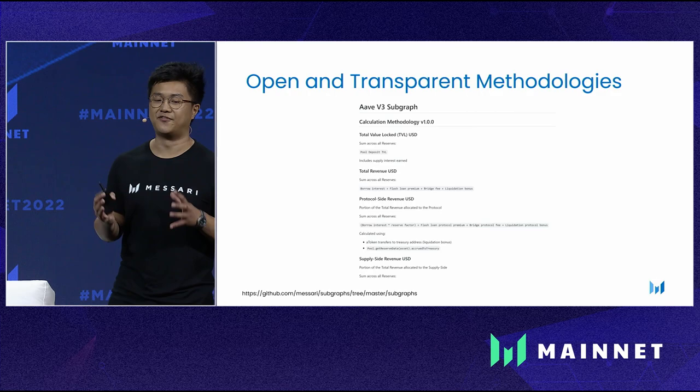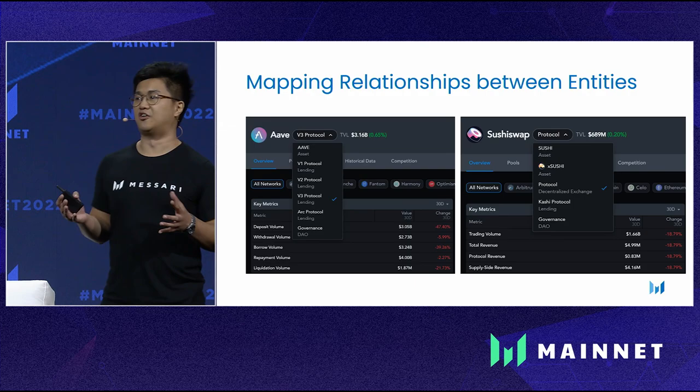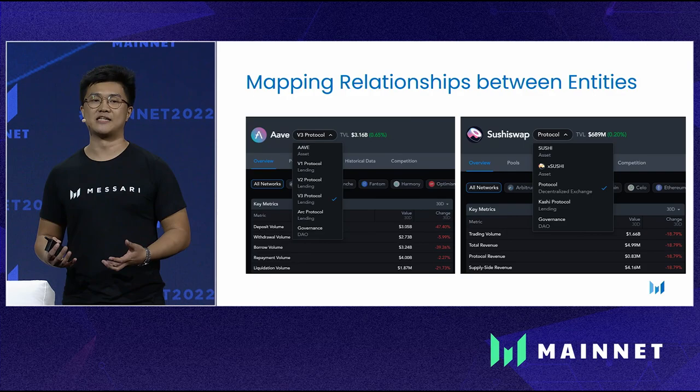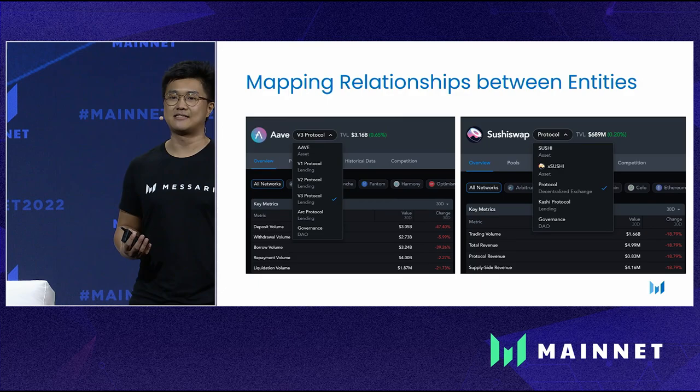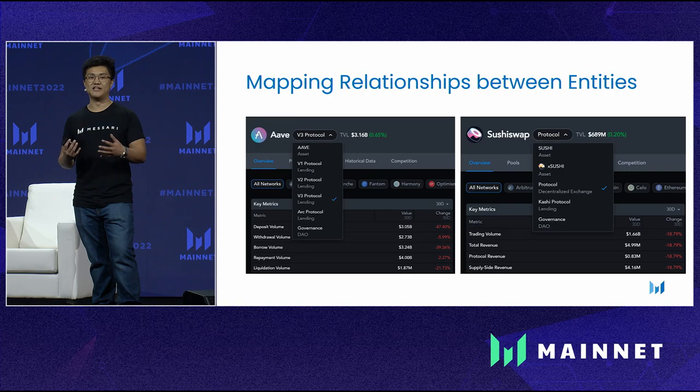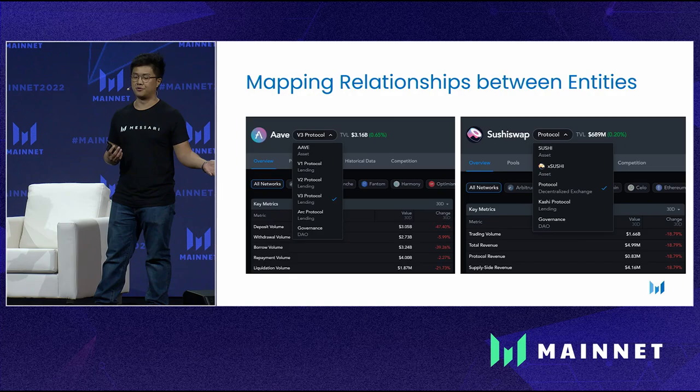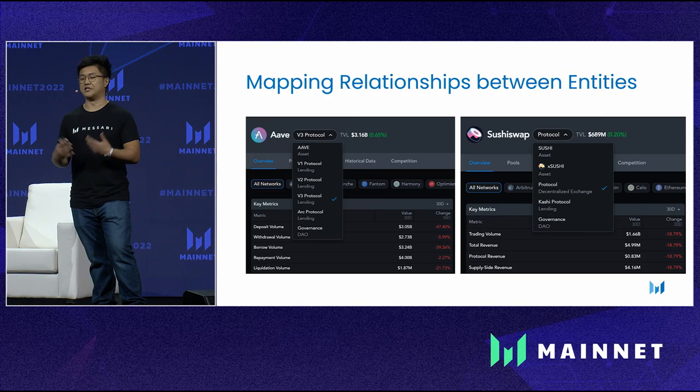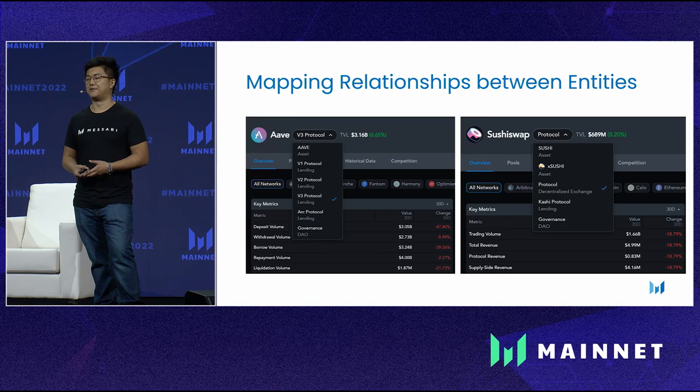We want to build the most accurate and best centralized repo for transparent methodologies. With the introduction of protocols in Mazzari, this enables us to begin mapping relationships between entities, and Mazzari is the first in the industry to begin doing this. Because we already support assets and DAOs, with the addition of protocols, individuals can now easily switch between Aave the asset, any of the Aave protocols, and Aave the DAO. Another example is SushiSwap, where you can switch between Sushi, xSushi, the various Sushi protocols, and the SushiSwap DAO.